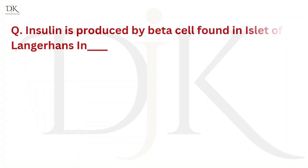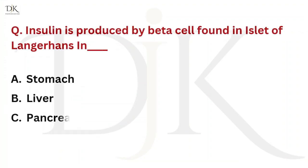Insulin is produced by beta cells found in the islets of Langerhans in which organ? The right answer is the Pancreas.